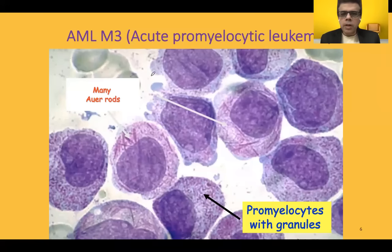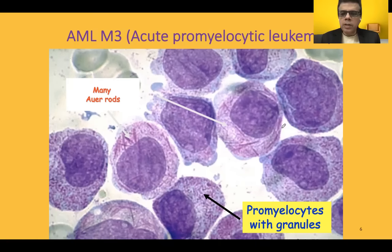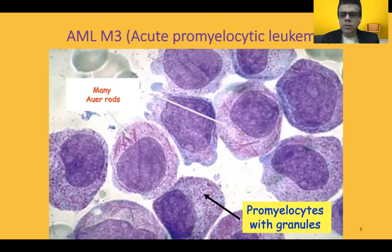In AML M3, acute promyelocytic leukemia, you can see the Auer rods — elongated rod-like structures — and granules. Multiple granules and Auer rods are seen in the myeloblast. The morphology described in vignettes includes large cells with round to slightly indented nuclei, with multiple nucleoli, usually two to four. If Auer rods are mentioned in the stem, go straight for myeloblast. Myeloblasts can be seen in any myeloid leukemia, including AML and even CML.